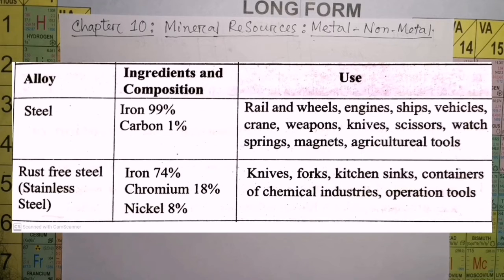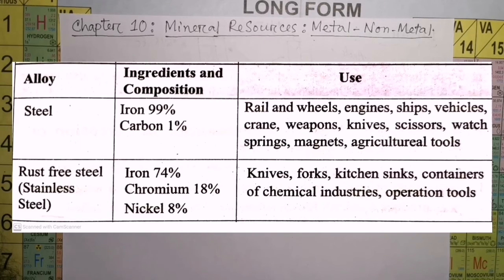The composition of steel is 99% iron and carbon 1%. Rails and wheels, engines, ships, vehicles, cranes, and weapons use steel. This is for MCQ. This is very important. You can use it in class 9. If you have a board exam, you can memorize it.